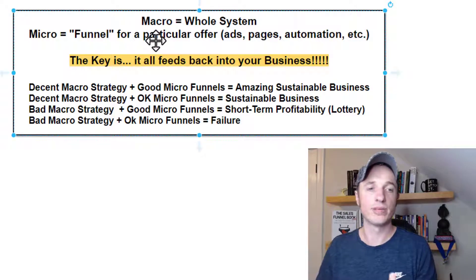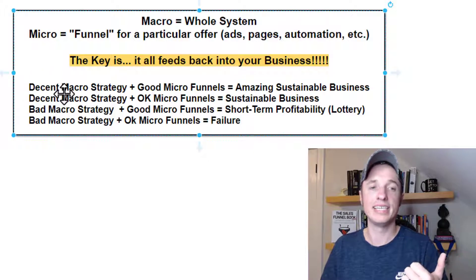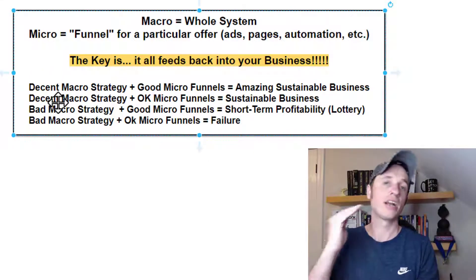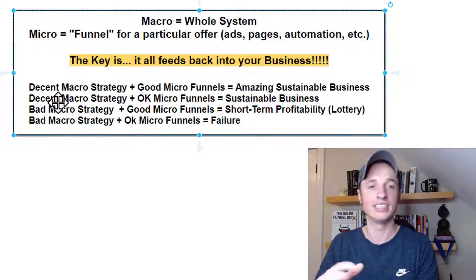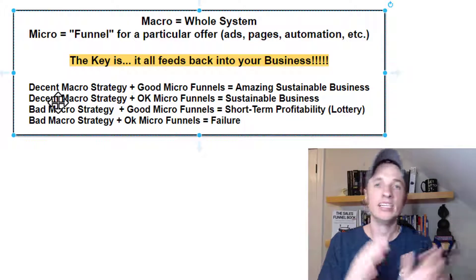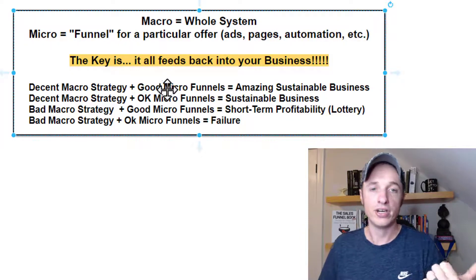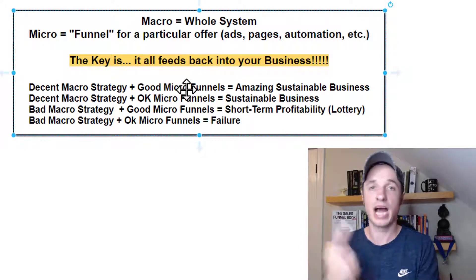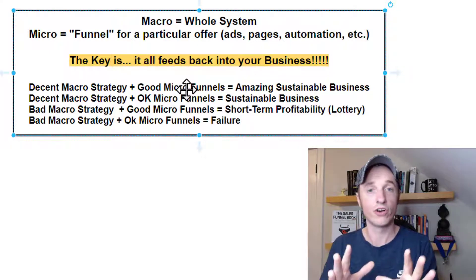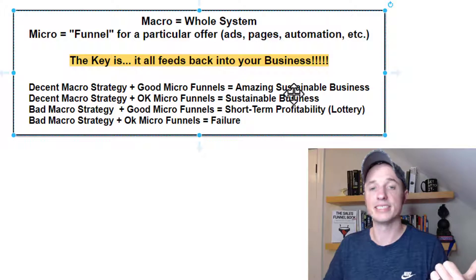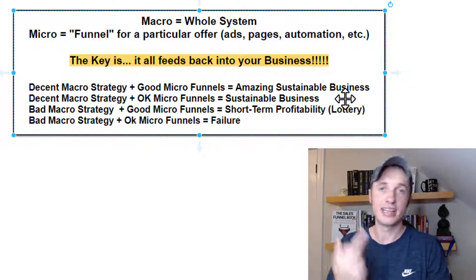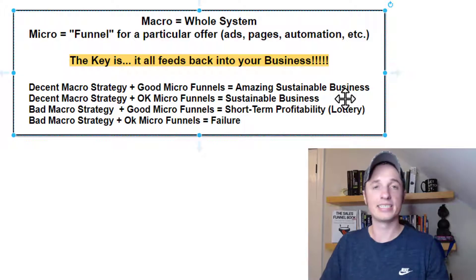Let's address four different scenarios. If you have a decent macro strategy — your micro funnels are all interconnected, cold to warm to hot, showing people different offers — and you also have good micro funnels with solid copywriting skills and great converting offers, you're going to have an amazing, sustainable business. If you've got the macro down and the micro down, that's an amazing sustainable business.